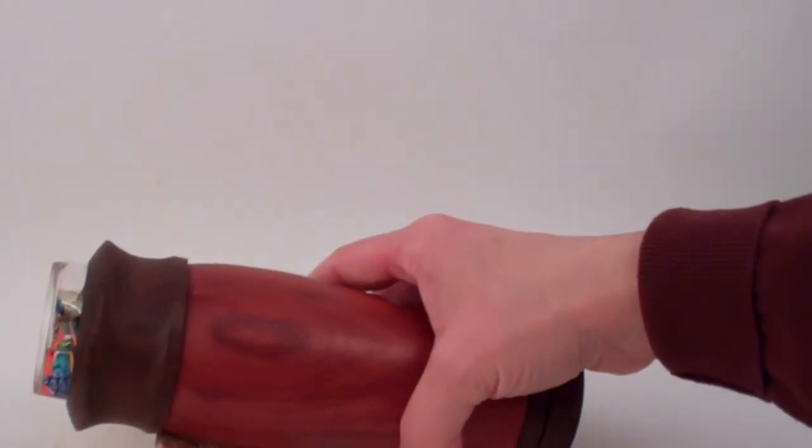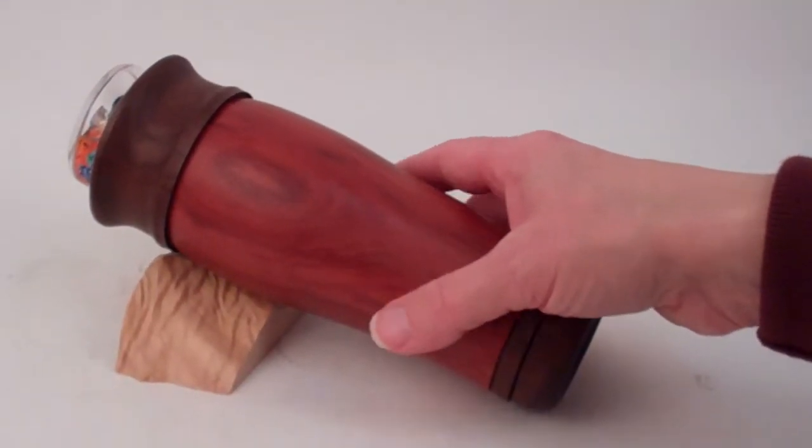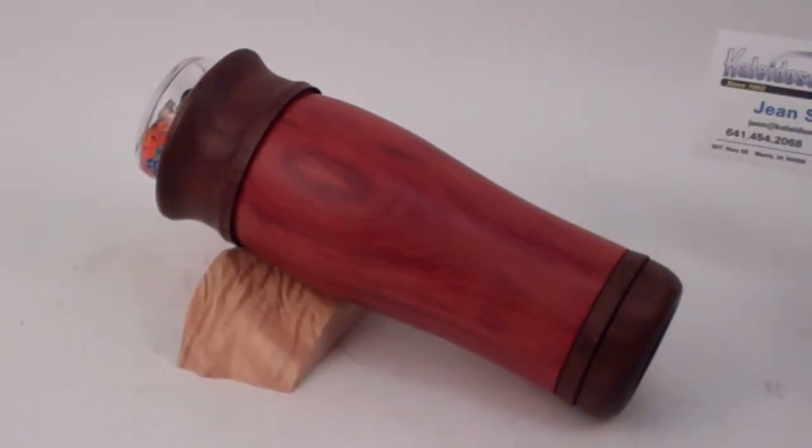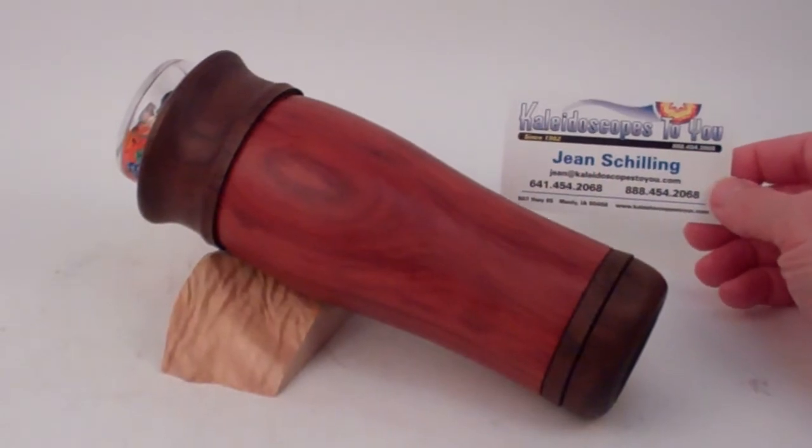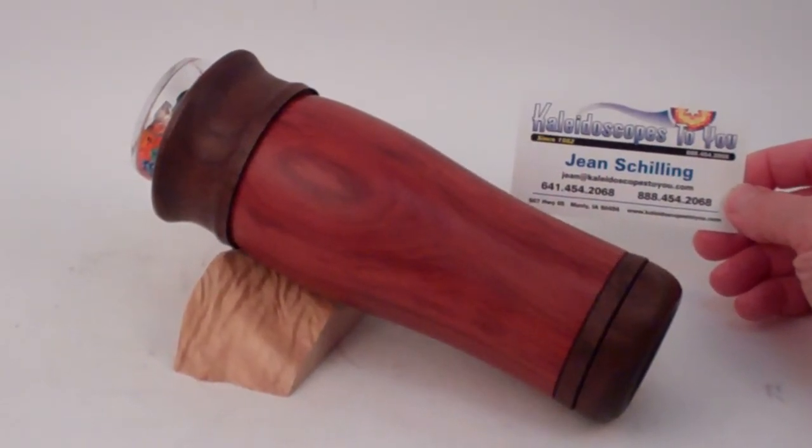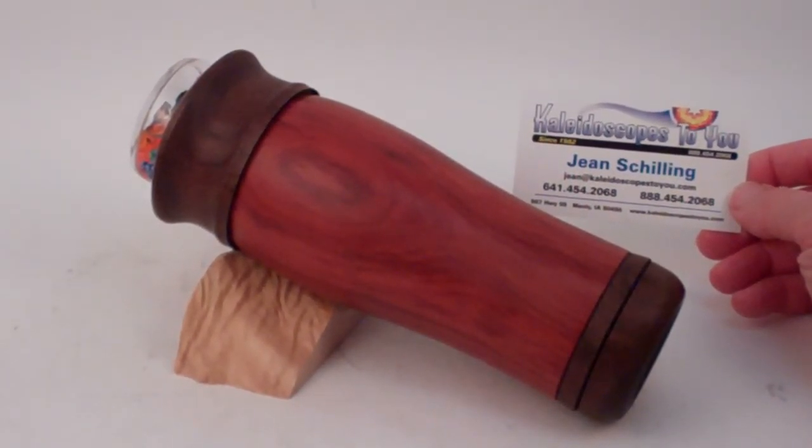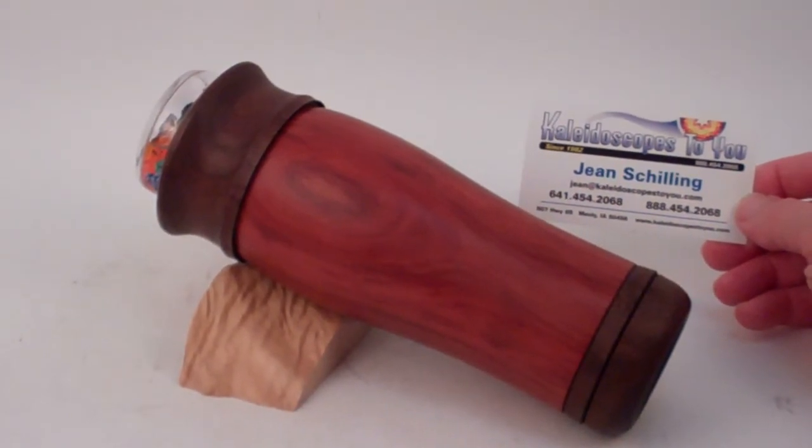This is a lovely handcrafted kaleidoscope in smoked mesquite wood and chakte coke wood created by David Branch, and it is currently available at kaleidoscopes2u.com.